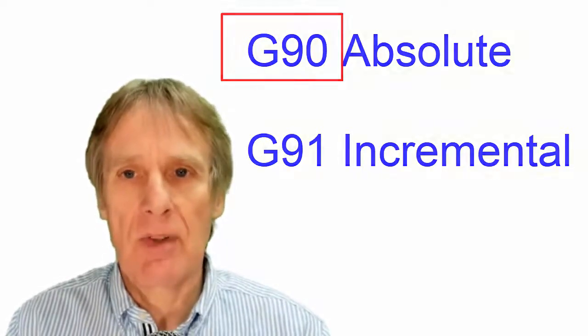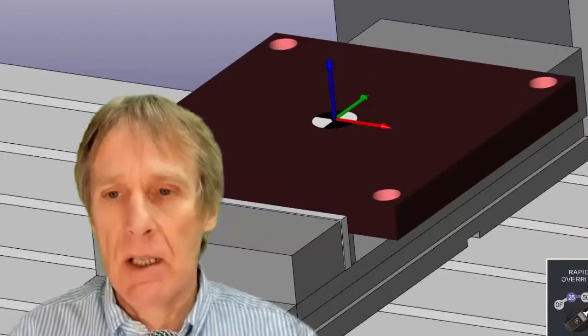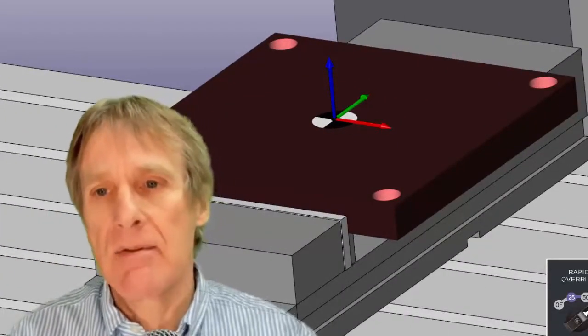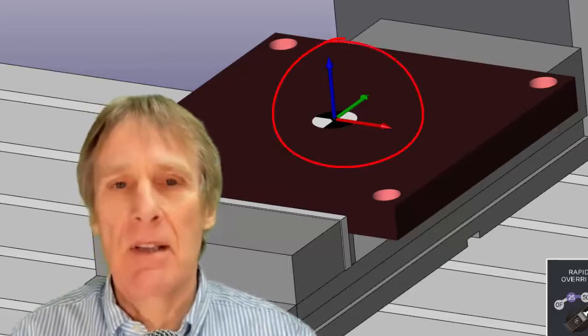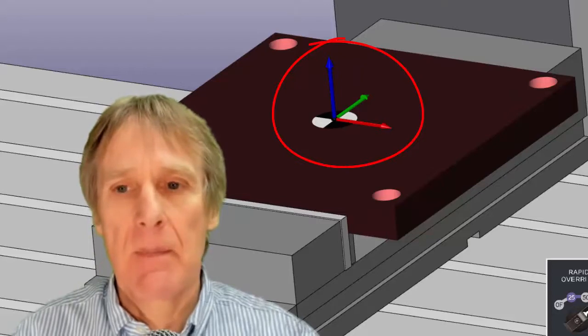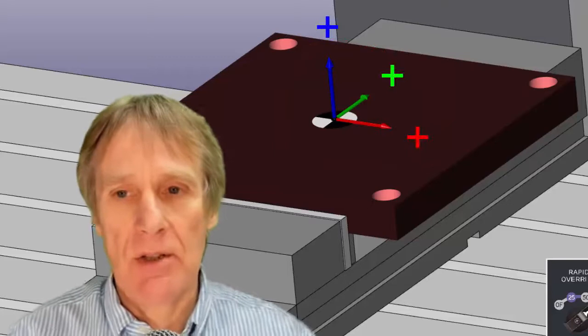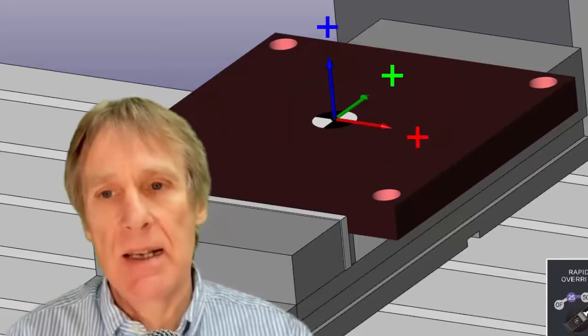This is a typical component that we have here. You'll notice there's a datum sign in the middle area. The blue is the Z axis, the green is the Y axis, and the red is the X axis, and they're all plus directions. This represents the datum, meaning every single dimension is from this point.